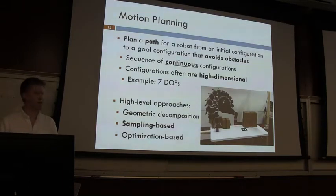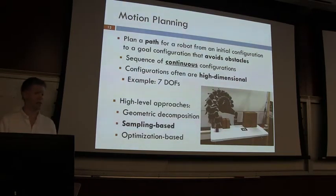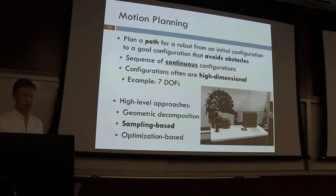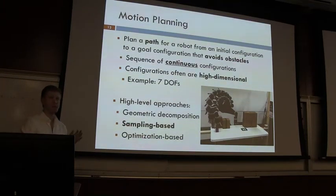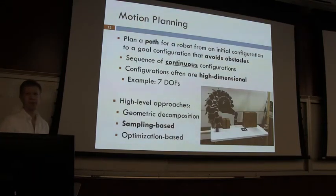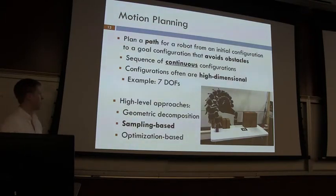Motion planning finds a path from an initial configuration to a goal configuration that avoids obstacles and adheres to joint limits or orientation constraints on the gripper. These problems are inherently continuous and often high-dimensional — sometimes planning for a base in x, y, theta, but often for robot arms with seven or more joints.